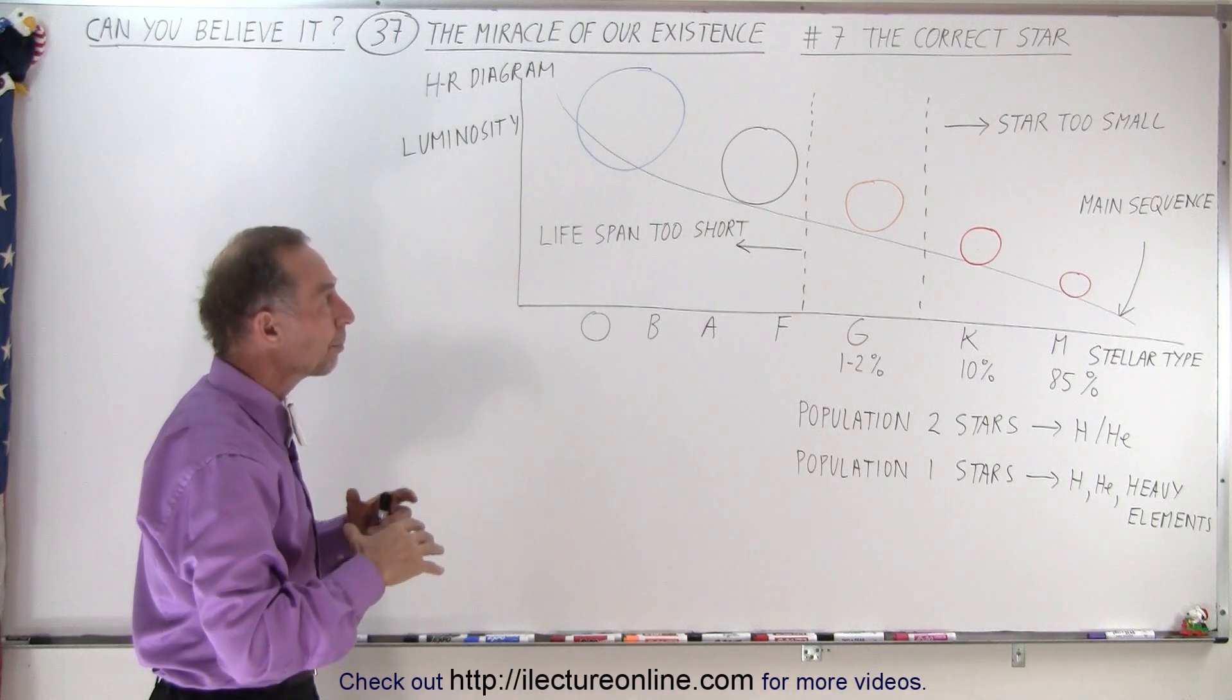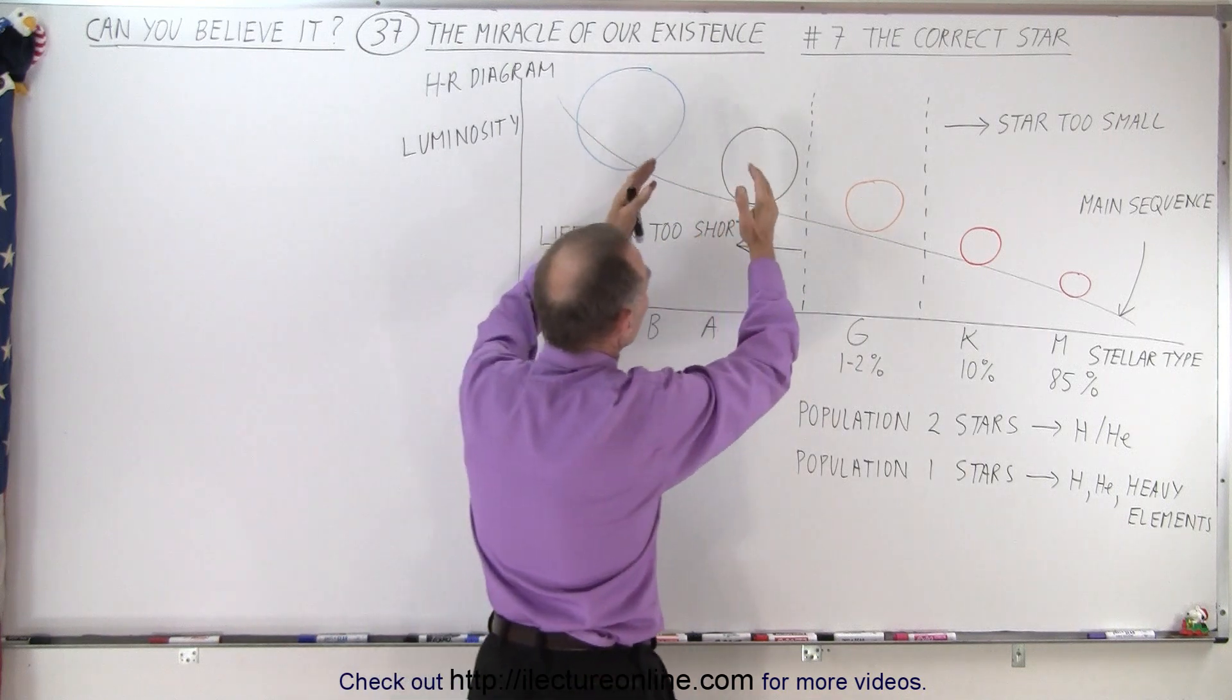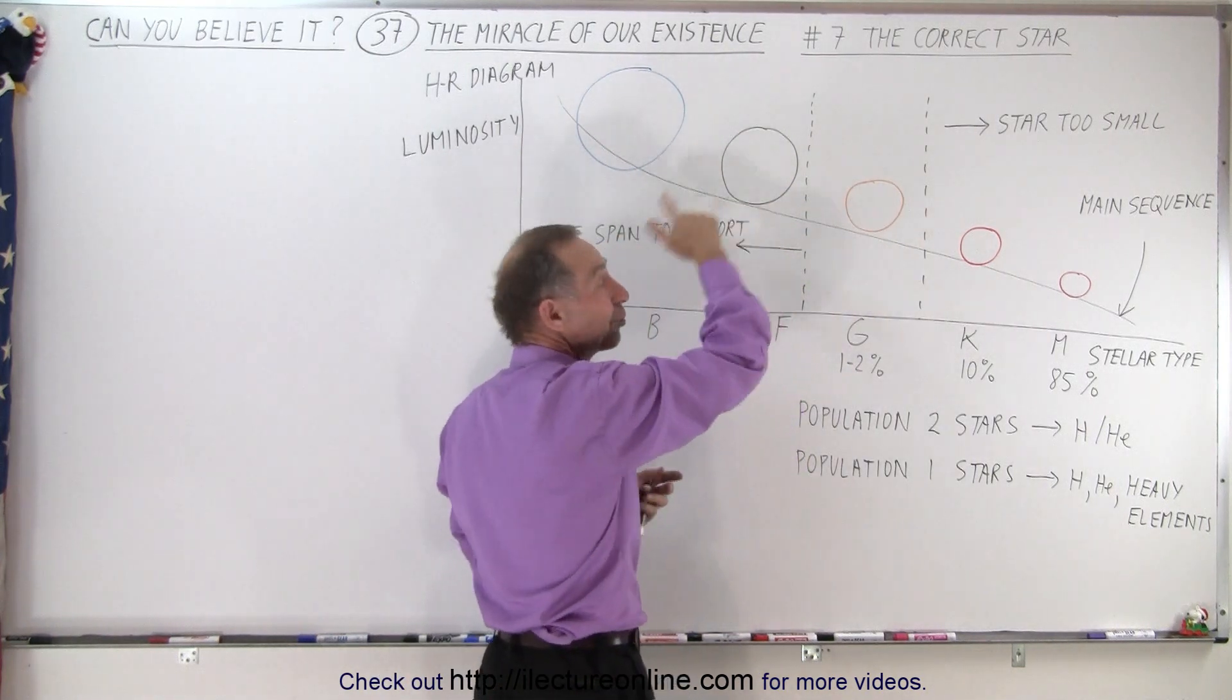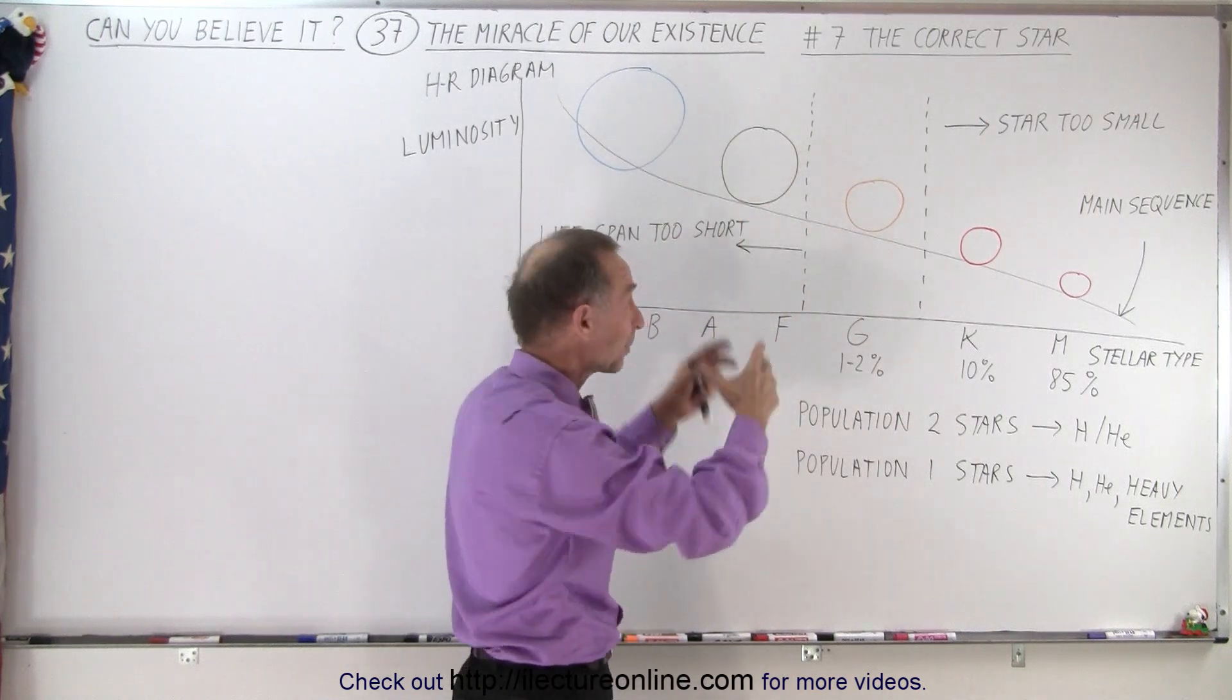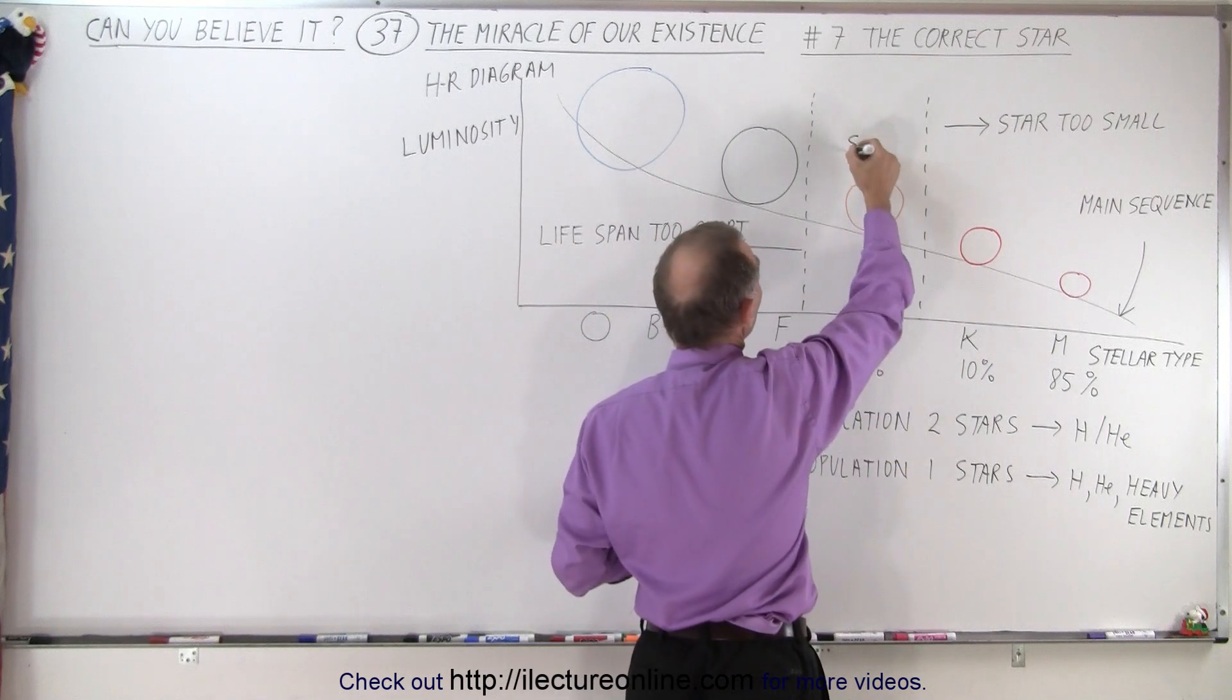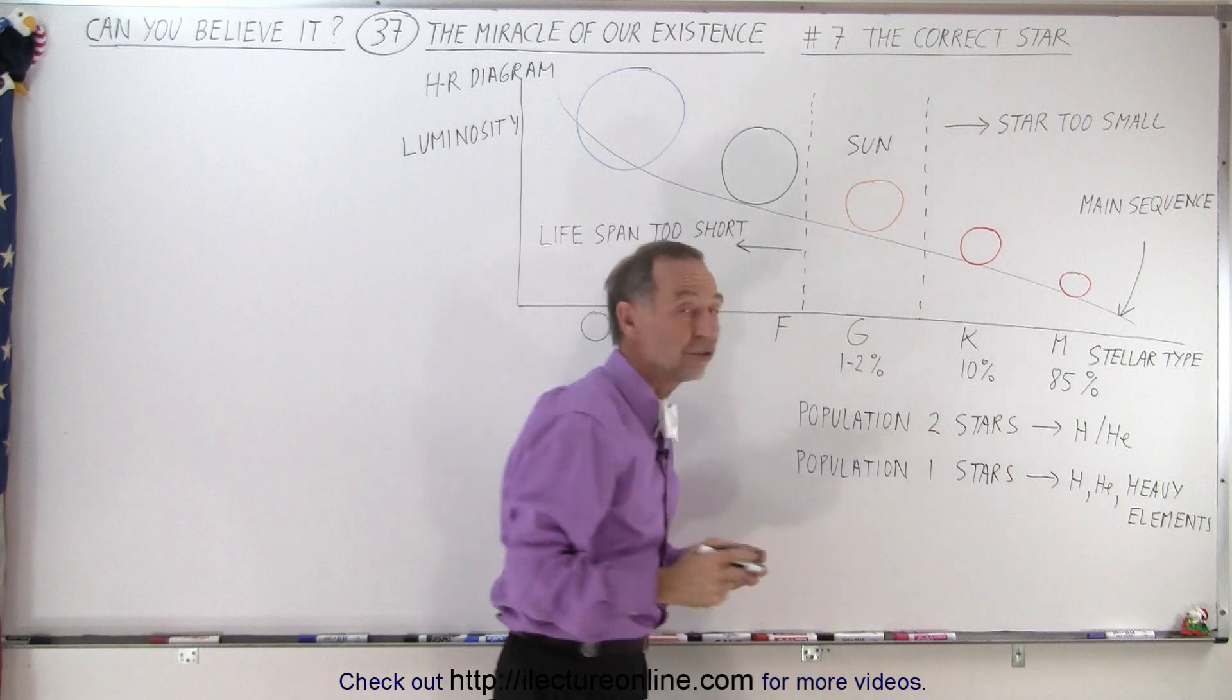But what it shows is that there's some very large blue-colored stars, some slightly smaller but still large white-colored stars. Then we have what we call yellow stars like the Sun. So the Sun would fall into this category. Then we have what we call orange stars and red stars.